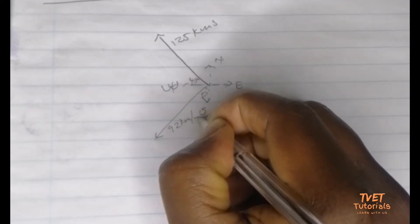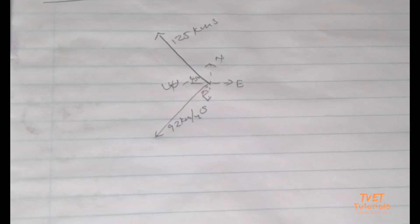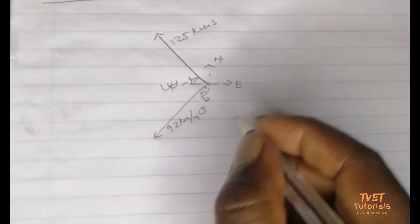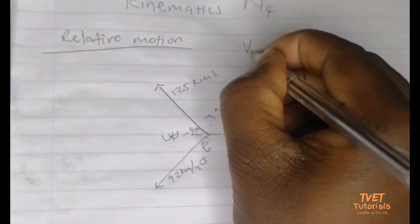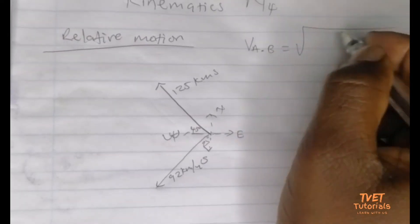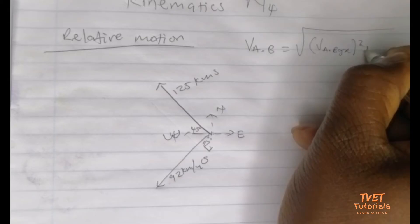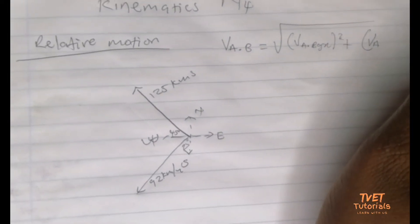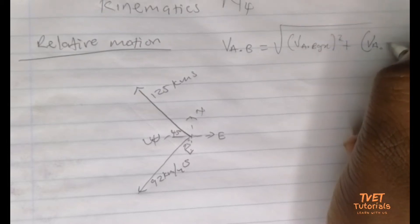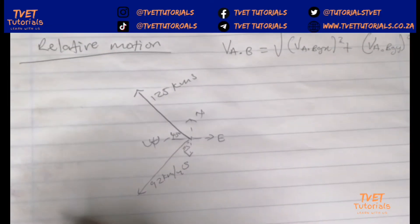The question says: calculate the magnitude and direction of the velocity of boat A relative to boat B. So we need to find the velocity of A relative to B. We know we must find the velocity of A relative to B in the x-direction, and also find the velocity of A relative to B in the y-direction.